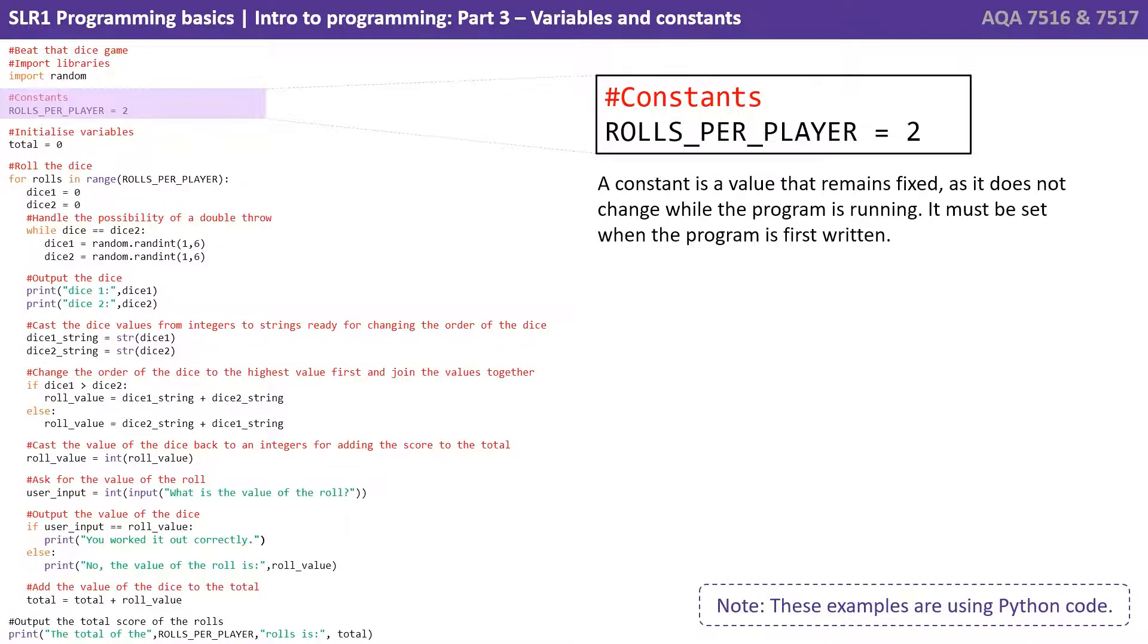Here we have a constant. A constant is a value that remains fixed. It does not change while the program is running. It can't vary - it remains constant. It must be set when the program is first written.